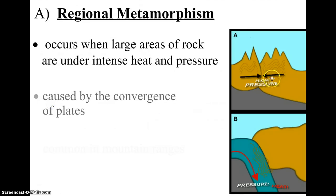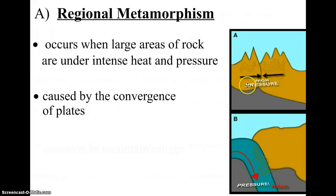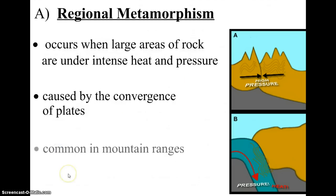This mainly happens at plate boundaries, where two plates are converging or colliding, like in this top picture here. You can see by the two arrows that the two plates are coming together, and when they collide, there's going to be a lot of pressure put on those rocks. You'll also notice that there are mountains there, because when plates collide, it often creates mountains. So mountain ranges are areas where we expect to see regional metamorphism.